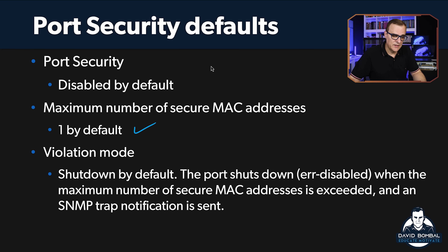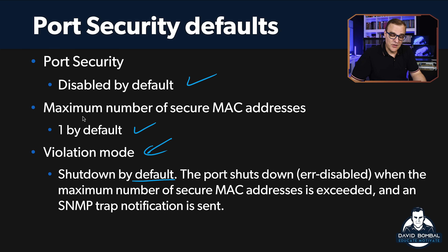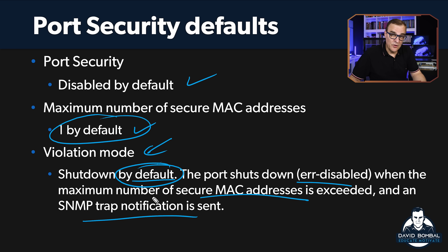These are the defaults: by default, only one MAC address is permitted. Port security is disabled by default, and the violation mode is shutdown. There are three violation modes you need to know. By default, shutdown means when there's a violation, the port is shut down. Restrict will give you notifications when something happens. Protect doesn't give you any notifications — for example, no SNMP traps. Shutdown is the default where a port is error disabled when the secure MAC address limit is exceeded, and one SNMP trap notification is sent.